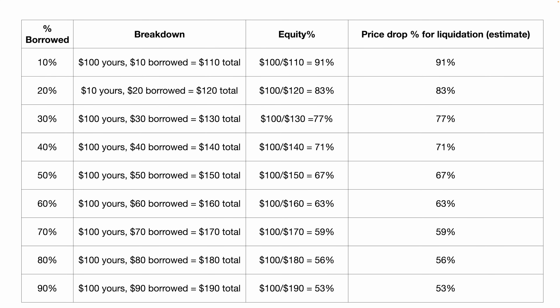I've made a chart showing how much of a price drop can get you liquidated based on how much you've borrowed. Note that these numbers don't account for margin maintenance — the minimum amount needed in your account — which means the actual price drop percentage for liquidation would be lower than what the chart shows.